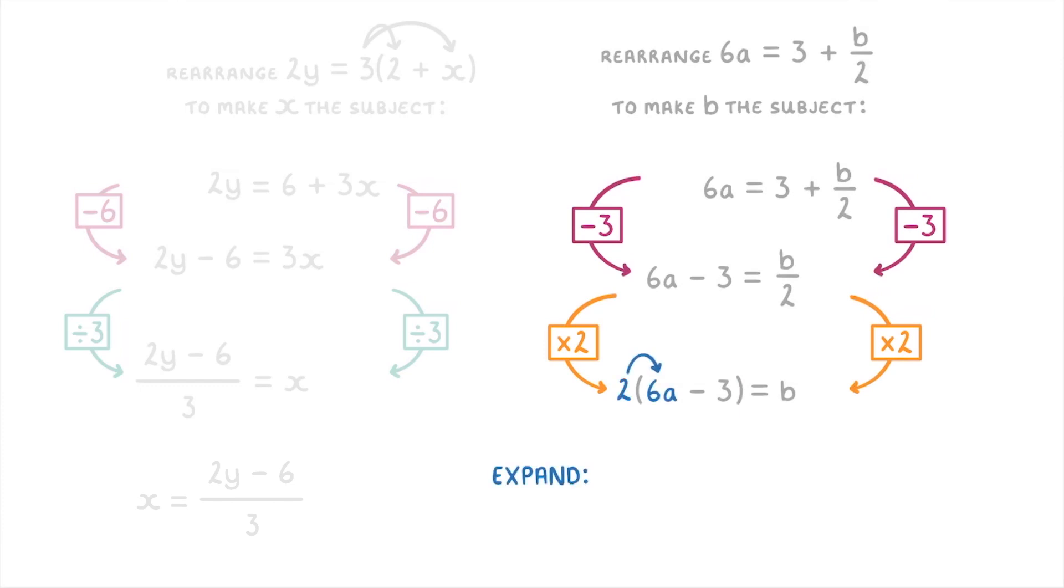So you can expand the bracket by multiplying the 2 by 6a to get 12a, and by minus 3 to get minus 6, which will all equal b. So our final answer will be b equals 12a minus 6.